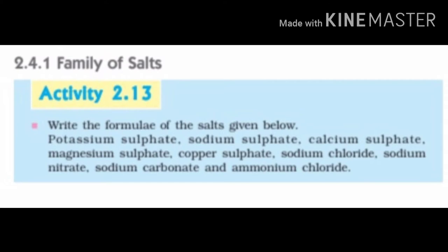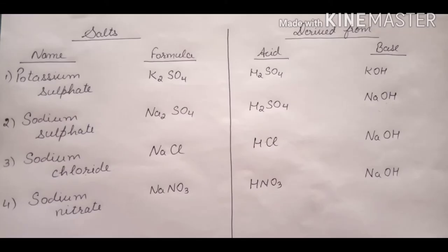After writing their formulae, we will find out which acids and bases neutralize to obtain these salts. Can you make out the type of acid and base used to obtain potassium sulfate? The sulfate of potassium sulfate is obtained from the acid sulfuric acid, and potassium is obtained from potassium hydroxide. So sulfuric acid and potassium hydroxide neutralize to obtain potassium sulfate.